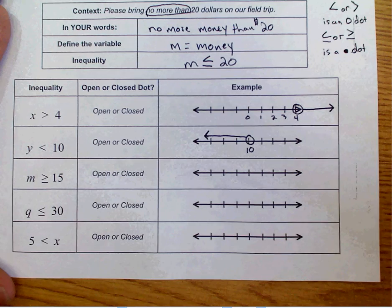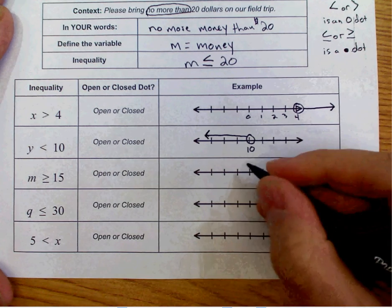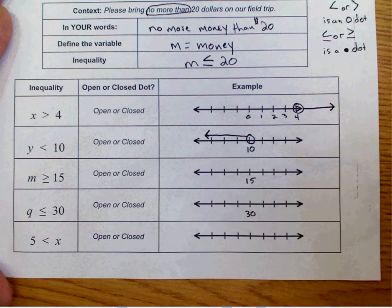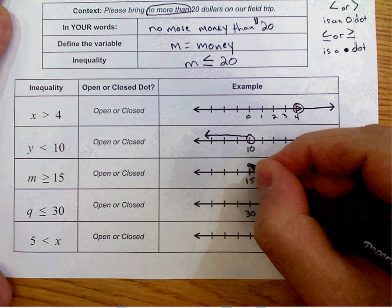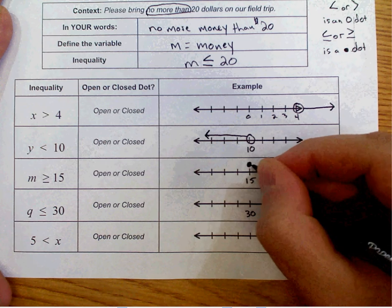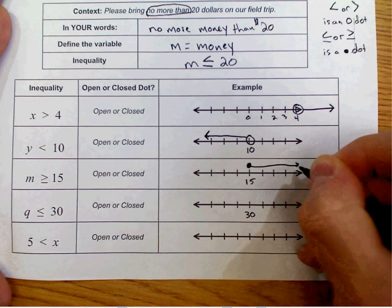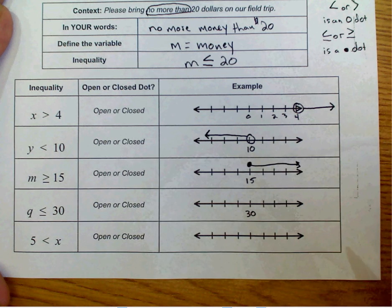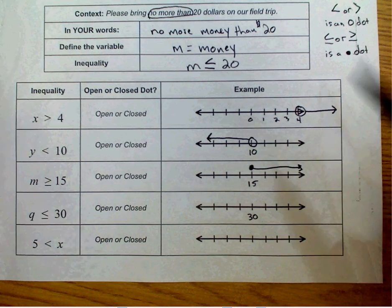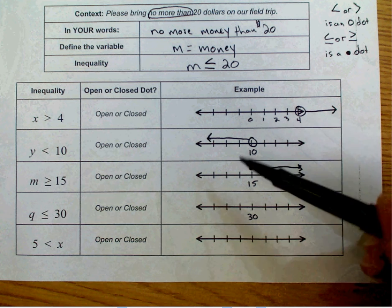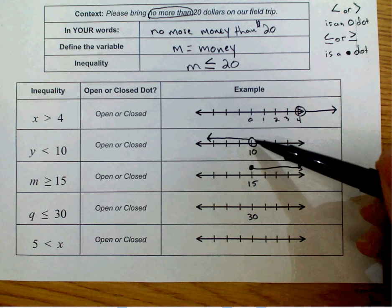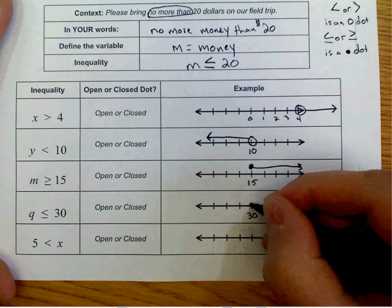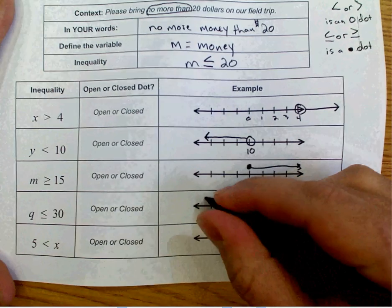Greater than or equal to or less than or equal to are closed dots. So we put a closed dot at 15, an arrow going to the right. It's a closed dot because it tells us that it can be 15. It's an open circle because that means it does not include that number. All right, we have a closed dot at 30 and an arrow going to the left.